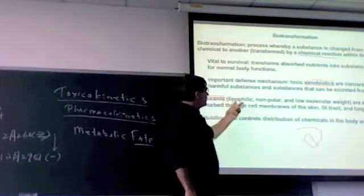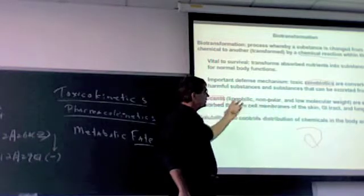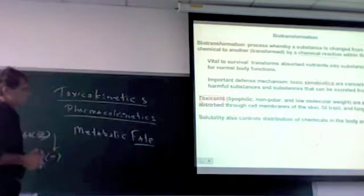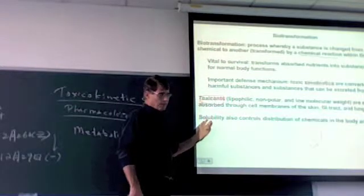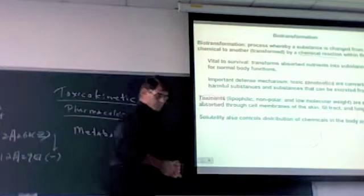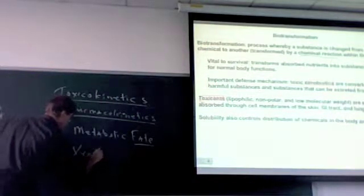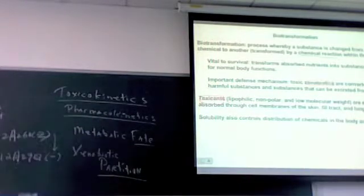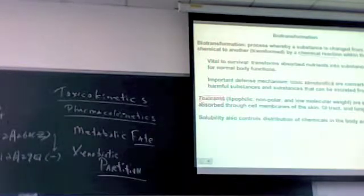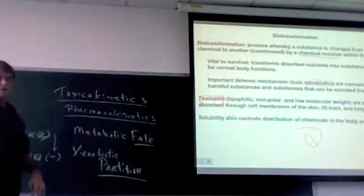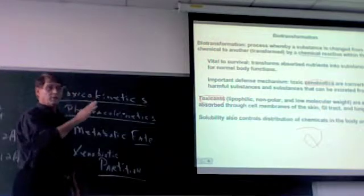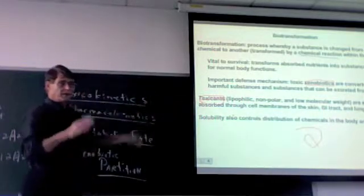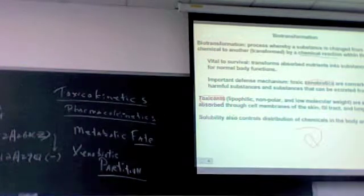All of these toxicants, whether they're lipophilic, nonpolar, or low molecular weight, are easily transported through cell membranes, skin, GI tract, and lungs. Also keep in mind that all of these xenobiotics are partitioning — just as if we were a big chromatography column. The chemicals on the chromatography column partition between the mobile phase and the solid phase. These chemicals also partition as they make their way through us — between the aqueous phase and the lipid phase.